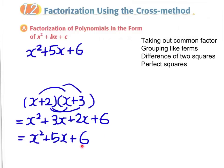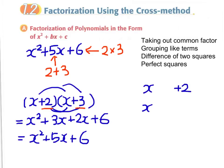You can see that the last constant term 6 in fact comes from the product of 2 and 3. And the middle x term, plus 5, is coming from the sum of 2 and 3. And therefore we now have some idea that the last term of this polynomial is the product of the two terms — 2 times 3 — and the middle term is the sum of the two terms, 2 and 3.